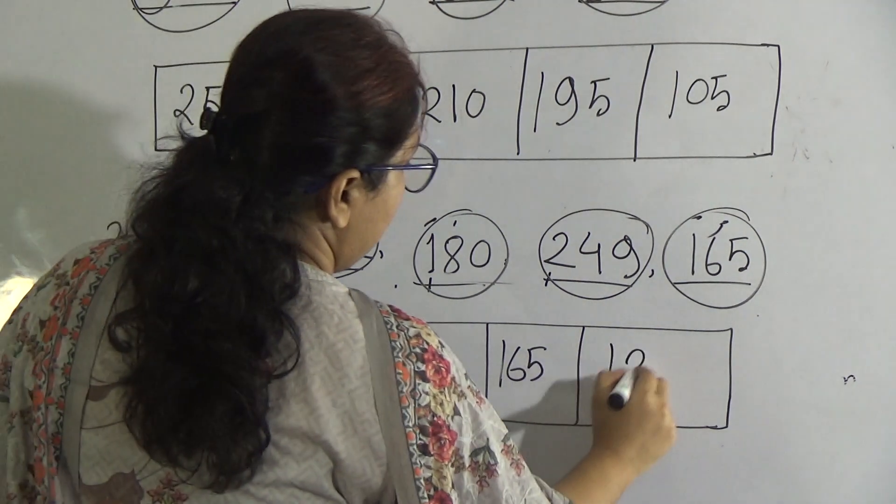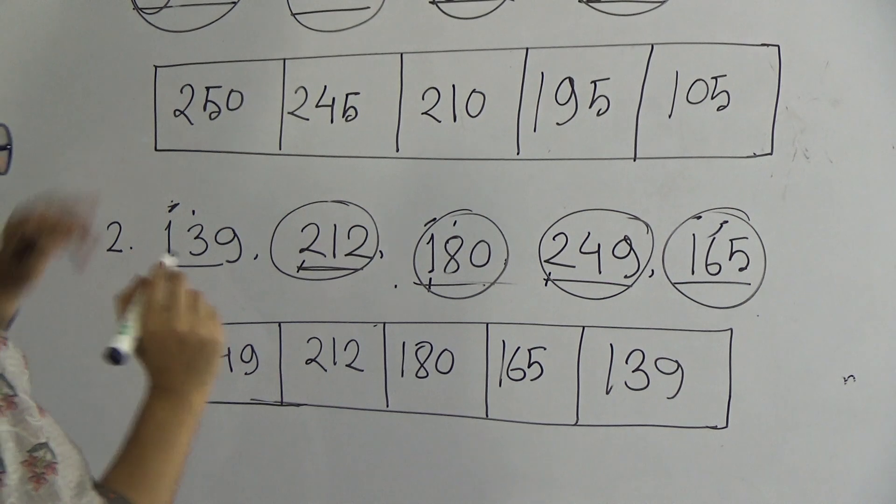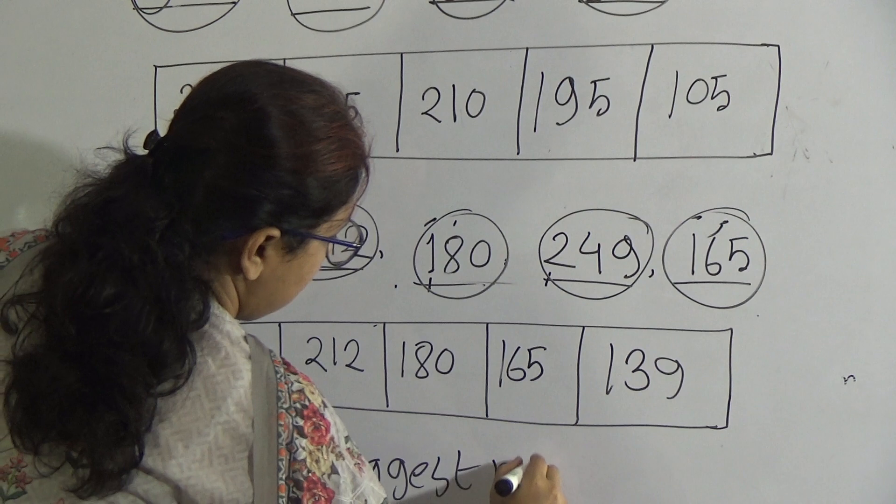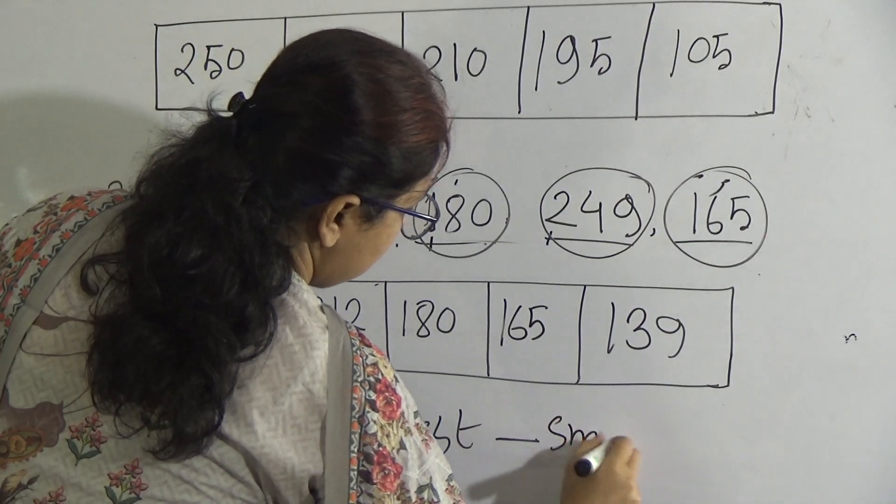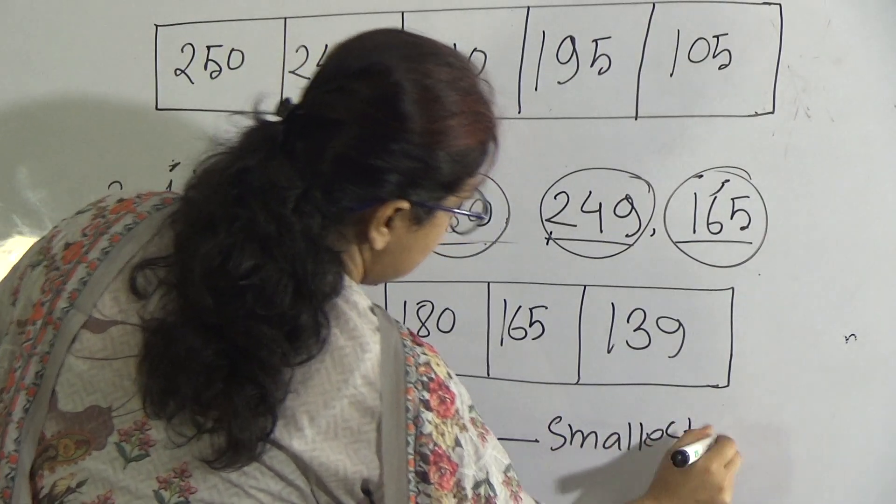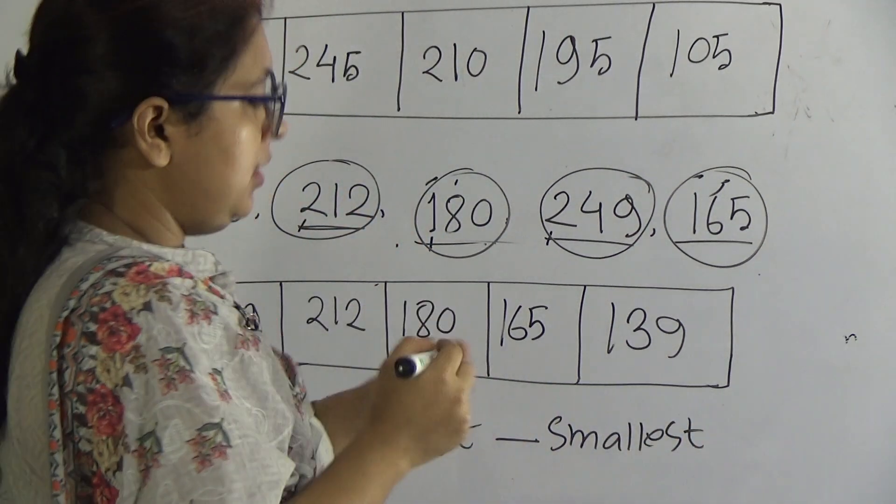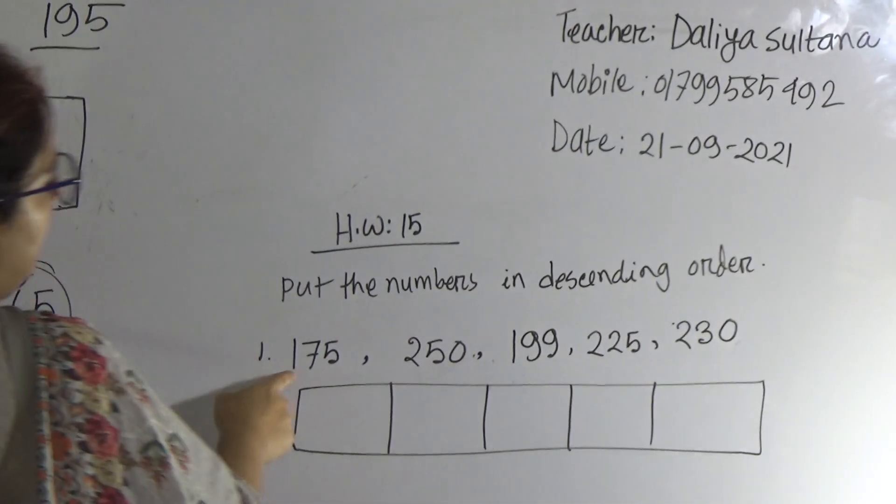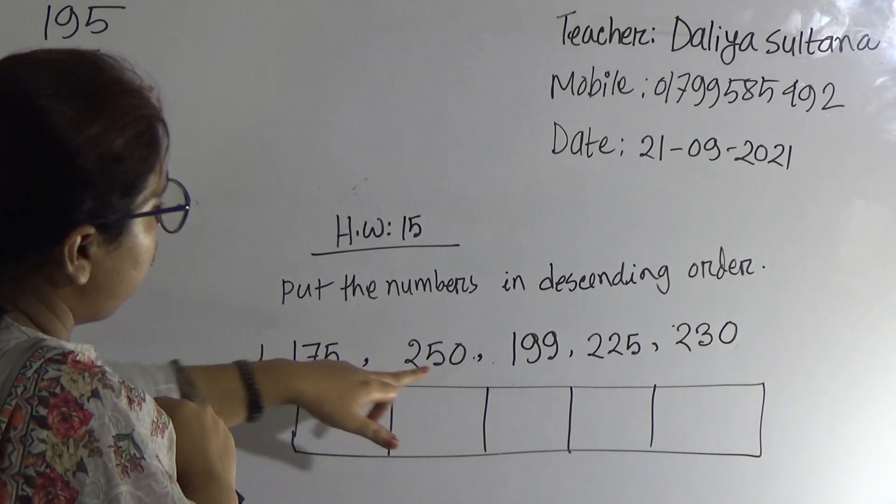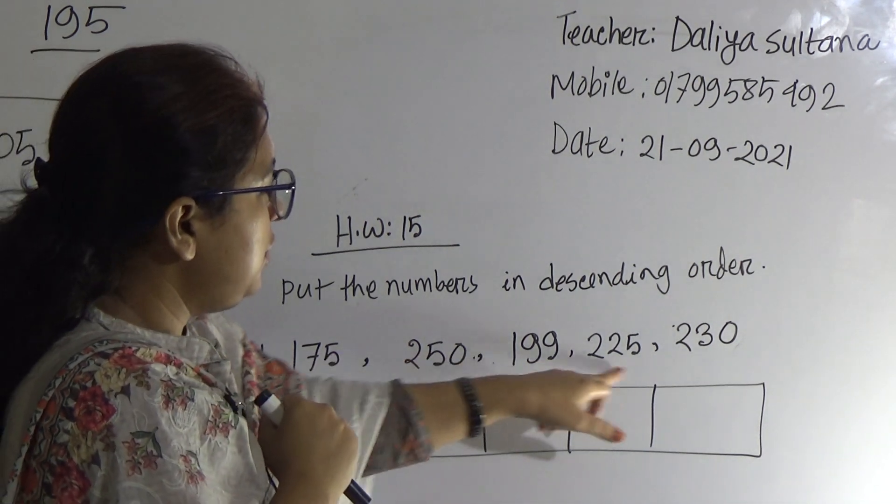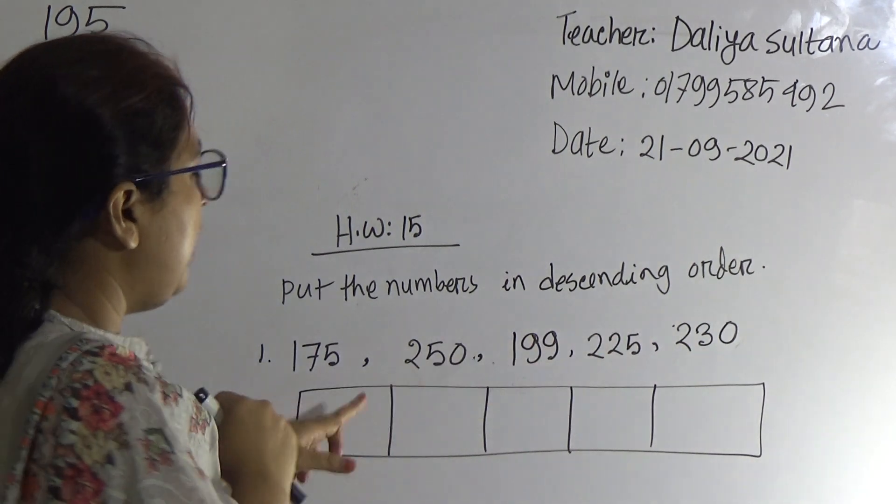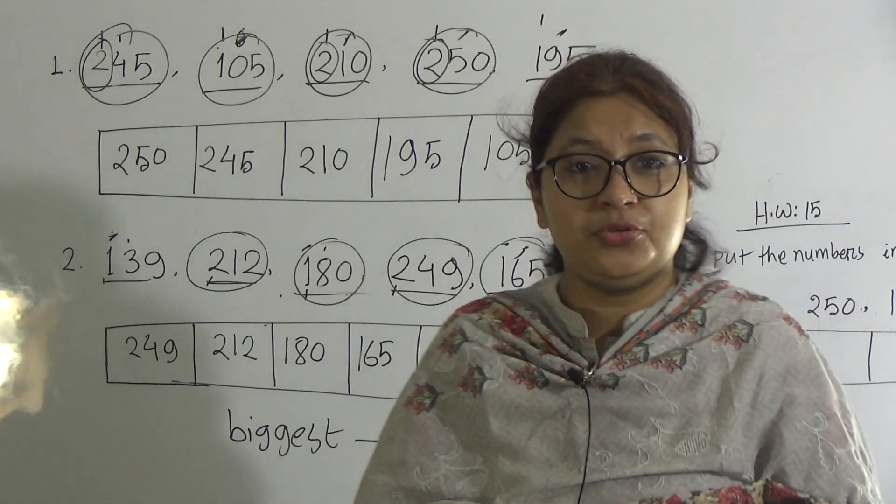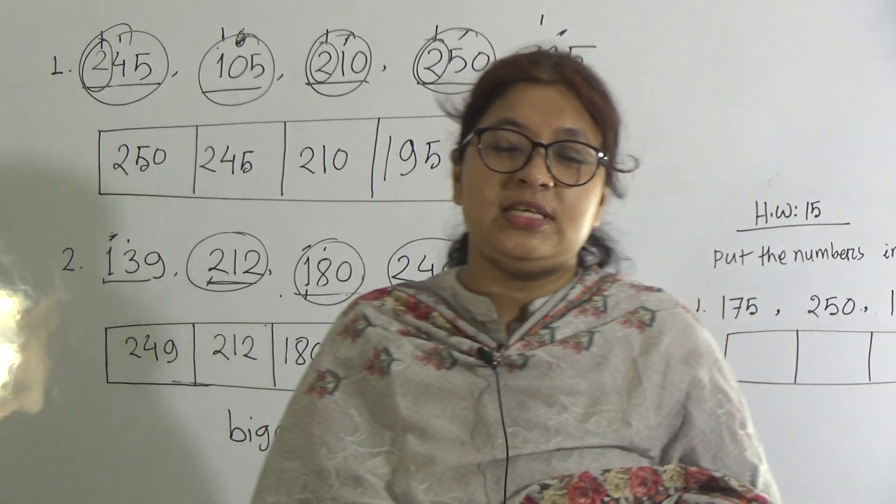So dear learners, descending order means biggest number to smallest number. We arrange the numbers biggest to smallest. Your homework also 15: put the numbers in descending order. Here are five numbers: 175, 250, 199, 225, and 230. You need to arrange these numbers biggest number to smallest number. So dear learners, hope you understood today's topic. Do your homework properly. Stay home, stay safe, and Allah Hafiz.